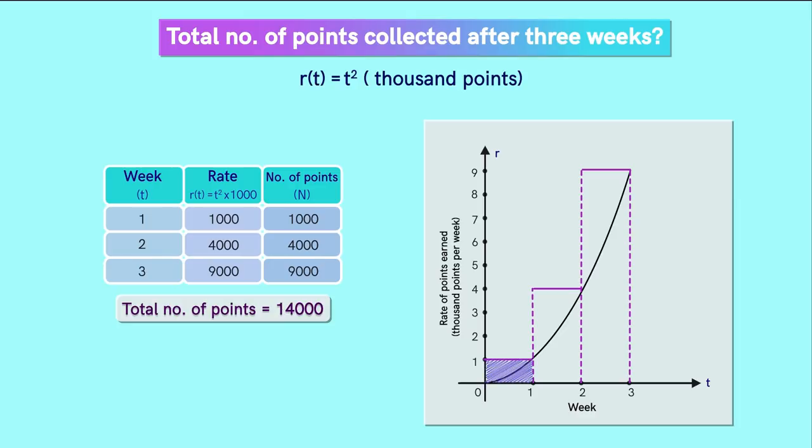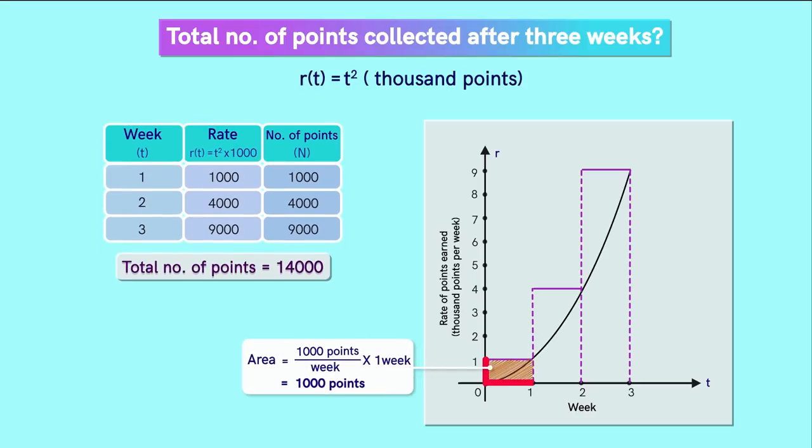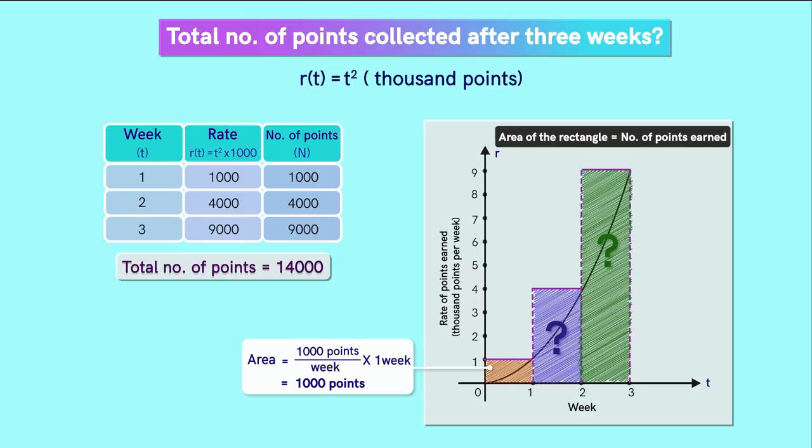The area of the first rectangle will be equal to the total number of points earned in the first week. How? The height of this rectangle is equal to the rate of 1000 points per week and its width is equal to 1 week. So its area will be equal to 1 multiplied by 1000 which equals 1000 points. So we see that the area below these horizontal lines tells us the total number of points earned during that duration.